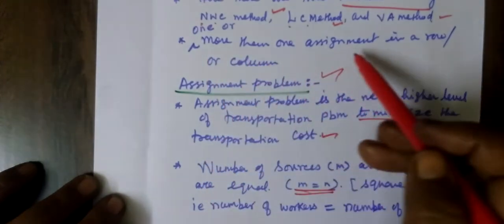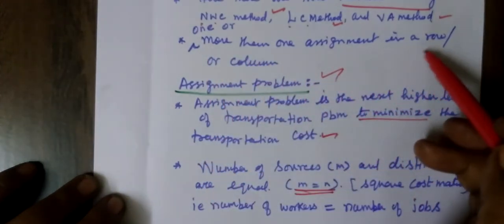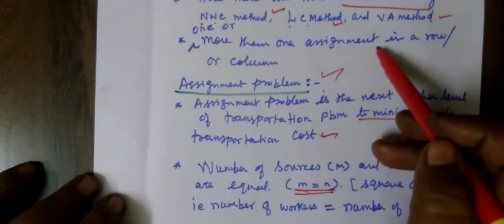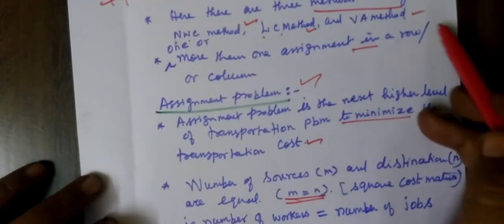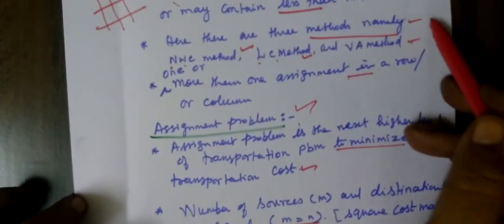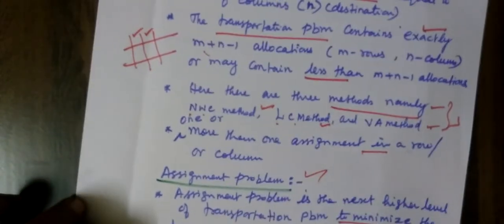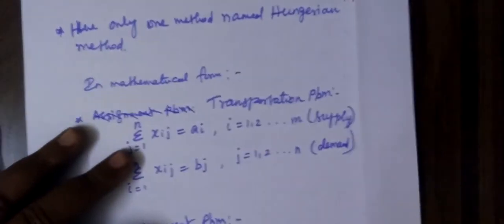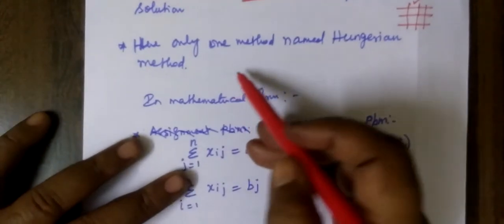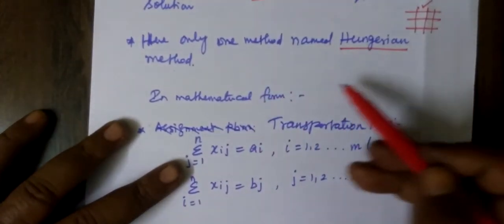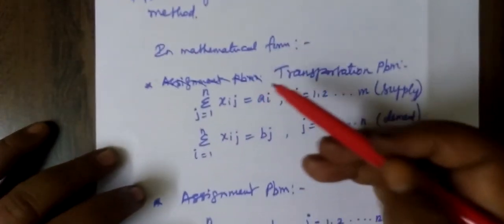In transportation problem, one or more than one assignment can be in a row or column. This is the previous approach with three methods. But in the assignment problem, there is only one method, namely the Hungarian method.